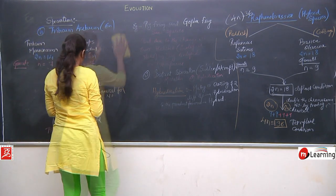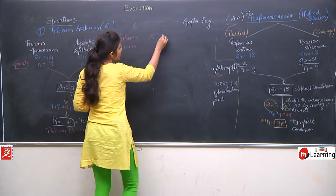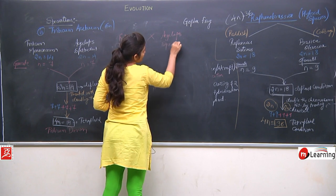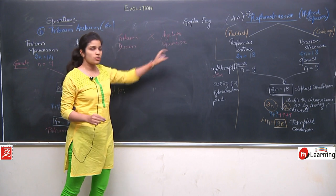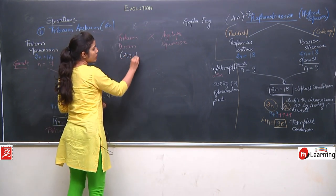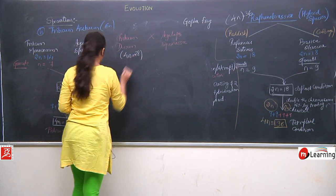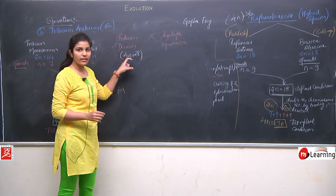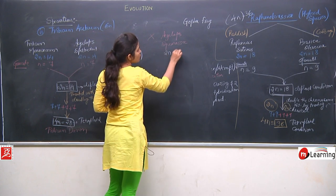When this Triticum durum crossed with Aegilops squarosa — these are species of the same genus — when both of these were crossed, Triticum durum is in the 4n condition, 4n equals to 28. So Triticum durum is the tetraploid condition having 28 chromosomes, and Aegilops squarosa is having 2n equals to 14.